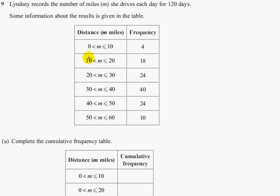Greater than 10 miles up to 20 miles, so this is greater than 10 miles less than or equal to 20 miles, happened 18 times. Greater than 20 miles and up to 30 miles happened 24 times. This is more than 30 miles and up to 40 miles happened 40 times.